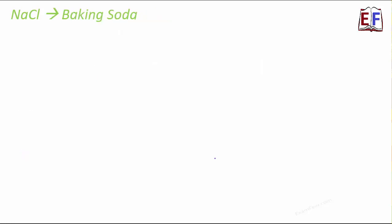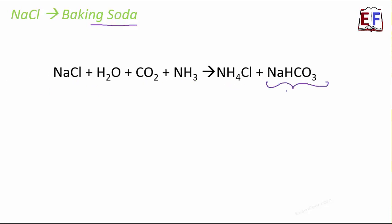Moving ahead with the next product, baking soda. Very commonly used in kitchens, especially when we bake a cake, or when we are trying to make some crispy pakoras, we use baking soda. How do you make it from sodium chloride? Sodium chloride reacts with water and carbon dioxide, and NH3 to form ammonium chloride, and NaHCO3, which is baking soda. Sodium hydrogen carbonate is baking soda.